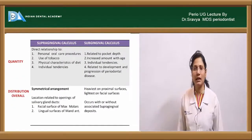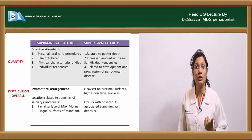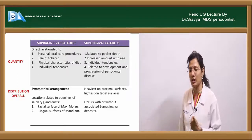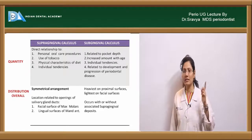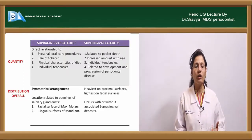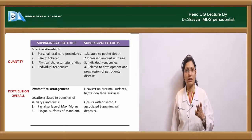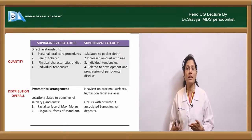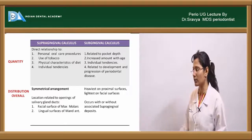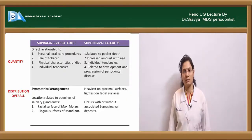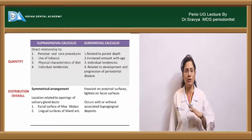The quantity of supragingival calculus is directly related to four factors: first, personal oral hygiene — good hygiene decreases production; second, tobacco use — more tobacco leads to more calculus; third, physical characteristics of diet — fibrous food aids self-cleansing, sticky food accumulates more plaque; fourth, individual tendencies — some people are heavy calculus formers and others are light calculus formers.